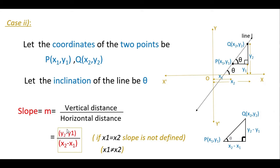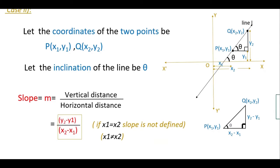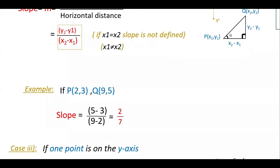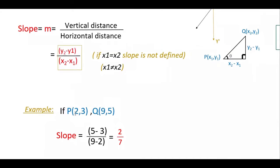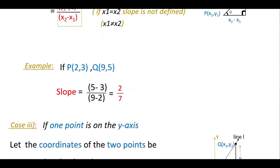So this is the slope formula. Here x1 should not be equal to x2, because x2 and x1 are in the denominator — if they are equal, the denominator is 0 which is not defined. For example, if you take any two points P(2, 3) and Q(9, 5), then the slope is y2 minus y1, so 5 minus 3 by 9 minus 2, that is equal to 2 by 7. So you can find slope if you know any two points on the line.